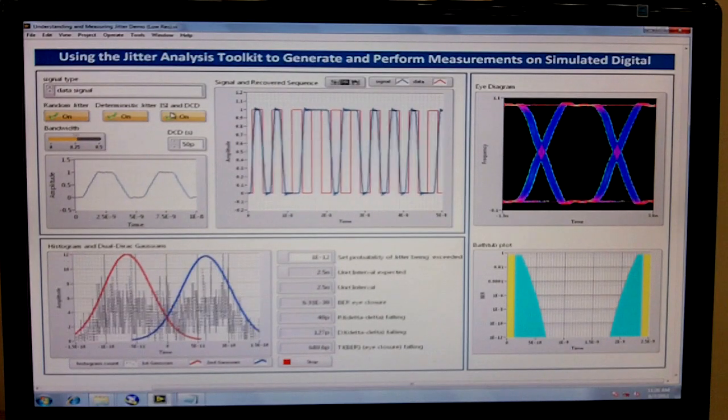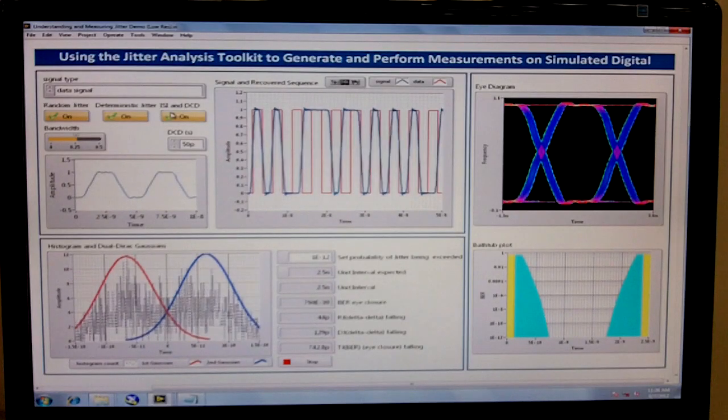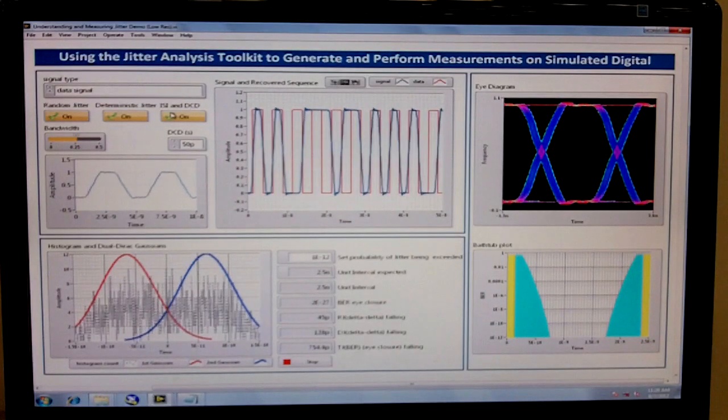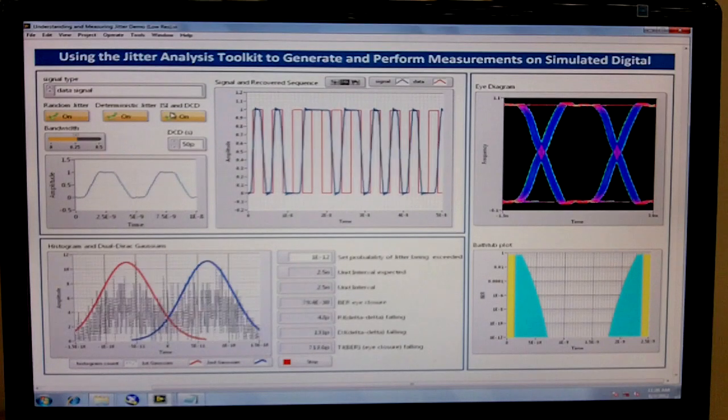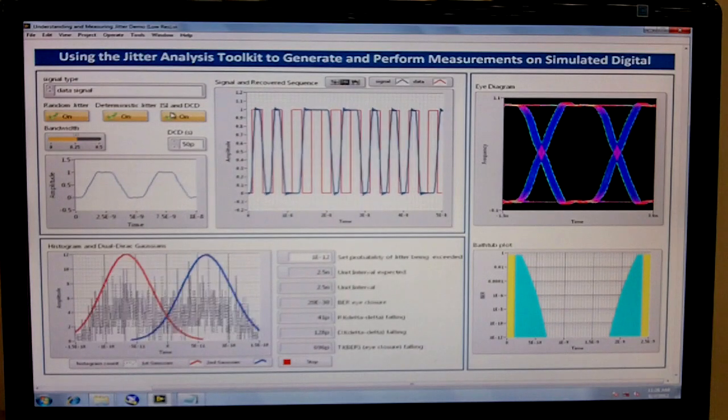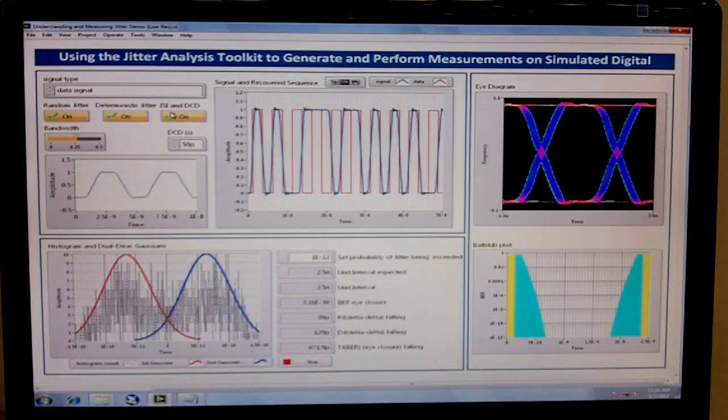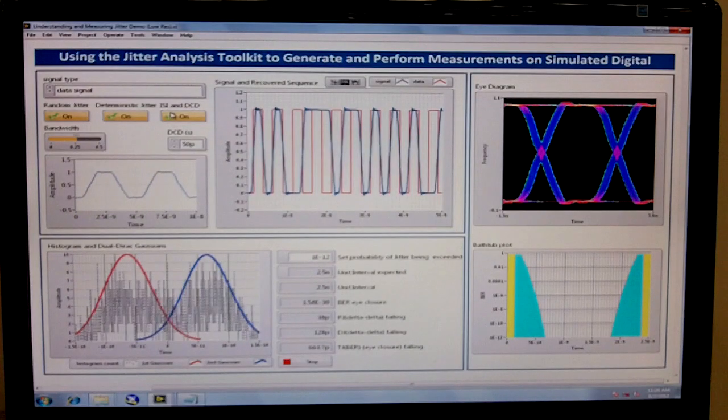And so the idea here is that you can not only use the LabVIEW Jitter Analysis Toolkit in order to analyze and understand and hopefully remove jitter from your signals, but you can also generate a signal using the toolkit in order to validate that all of your measurements are set up correctly.